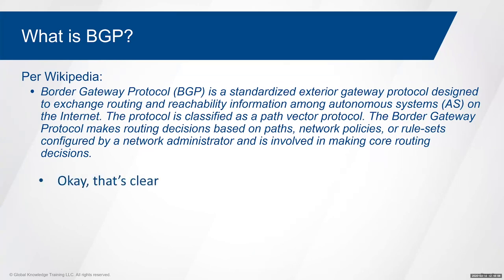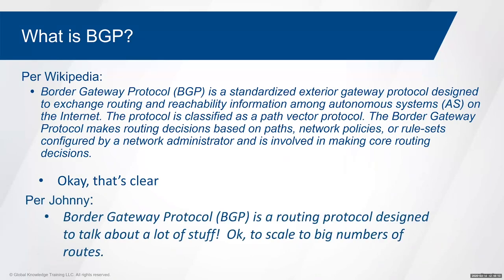My definition: BGP is a routing protocol designed to talk about a lot of 'stuff' — and stuff is a technical term. It scales to big numbers. The stuff can be IPv4 routes, IPv6 routes, all those different address families. It can support multi-protocol label switching, layer 2 or layer 3 VPNs, and scale to bigger numbers in those environments. In large data center environments it supports virtual extendable LANs, which can theoretically support up to 24 million things hanging off the network fabric.